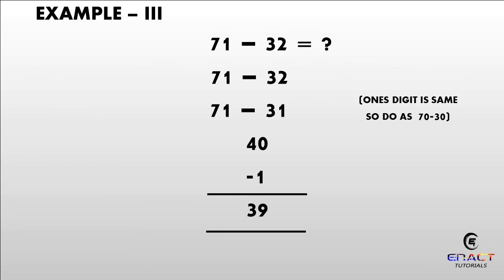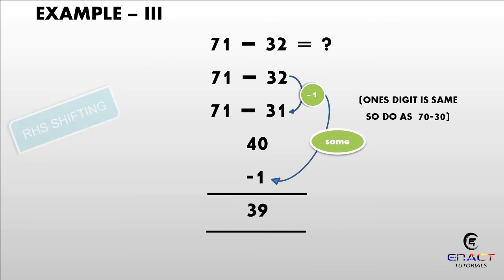Example number 3: 71 minus 32. Subtracting 1 from 32, it will become 31. As you can see, the ones digit is the same, so directly subtract 71 minus 31. Hence our answer is 40. Keeping minus 1 the same and subtracting 40 minus 1, our answer will become 39.